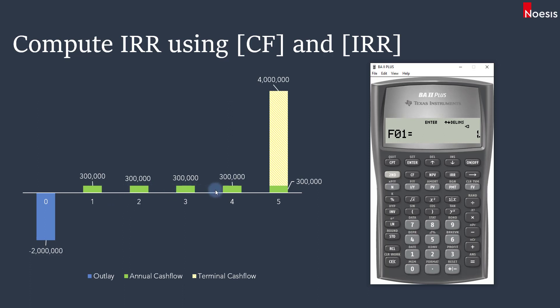The 300,000 actually repeats four times, meaning for the first four years there is a series of cash flows of 300,000 dollars per year. C02 is then the cash flow for the fifth year. In year five, the cash flow is four million plus 300,000, which equals 4,300,000. Click Enter.